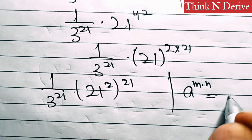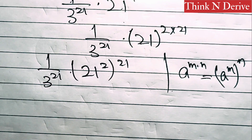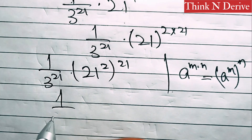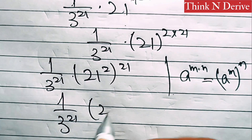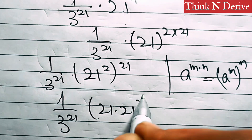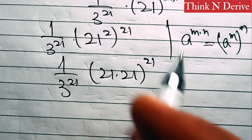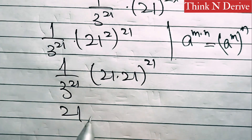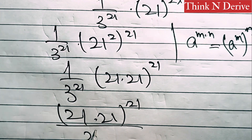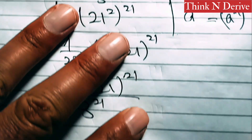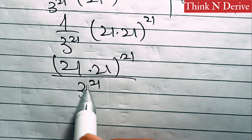This can be further written as 1 over 3 power 21, times (21 squared) power 21, because we know a power (m times n) is equal to (a power m) whole power n. So this is 1 over 3 power 21, times (21 times 21) whole power 21.